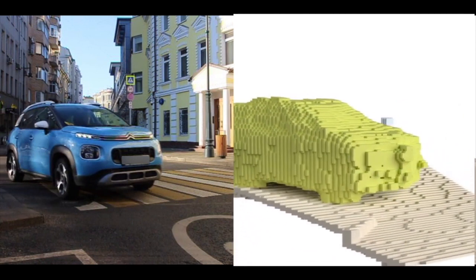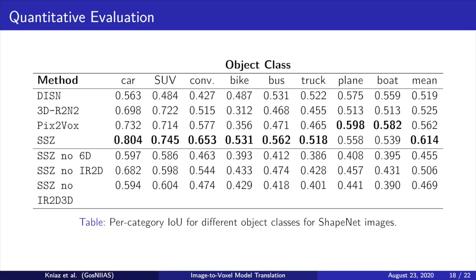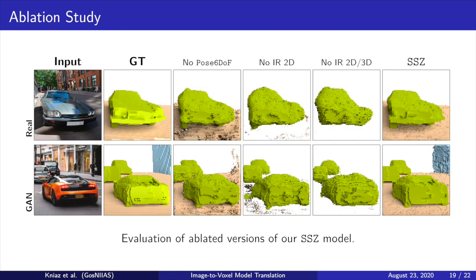The 3D-R2N2 model is the next best performing model for challenging non-rigid classes such as human. We evaluate the necessity of all components of our framework by performing 3D scene reconstructions using an ablated version. We firstly remove our Pose 6DOF discriminator to check the geometric accuracy of the reconstructed scene. Secondly, we compare the performance of the SSZ generator without 2D-to-3D inverted residual blocks. The ablated version of our model fails to reconstruct textureless objects such as ground and fine-shaped details. Therefore, all components of our SSZ framework contribute to achieving state-of-the-art performance for single-photo 3D reconstruction of multi-class non-rigid objects.